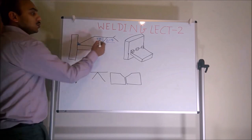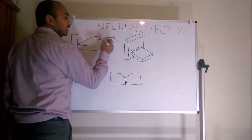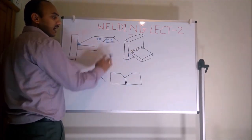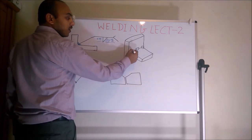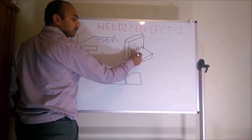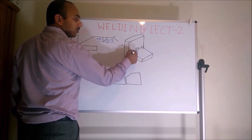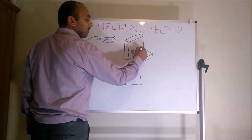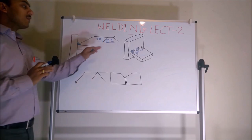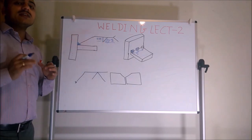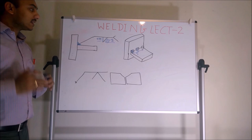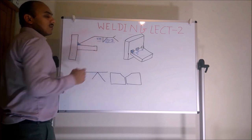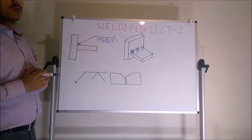In stitch weld notation, 2-5 means 2 inches of weld in every 5 inches of total length. For example, along a plate we weld 2 inches, skip, then weld 2 inches in the next 5-inch span, and so on. This is applied when strength is not the primary factor — we just want to connect the parts. The 2-inch weld within each 5-inch length is called stitch weld.